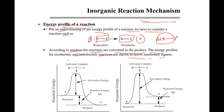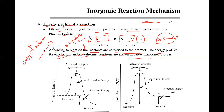There are two kinds of reactions: exothermic and endothermic. Exo means outside, so in exothermic reactions energy is being released. Endo means inside, so in endothermic reactions energy is being absorbed. If energy is released, the reaction is exothermic; if energy is absorbed, it is endothermic.